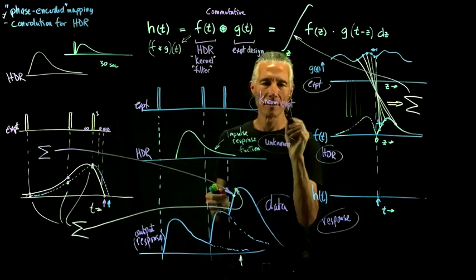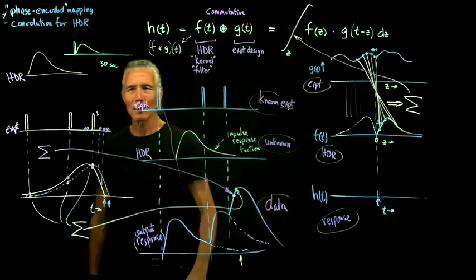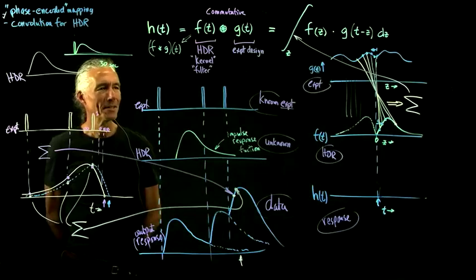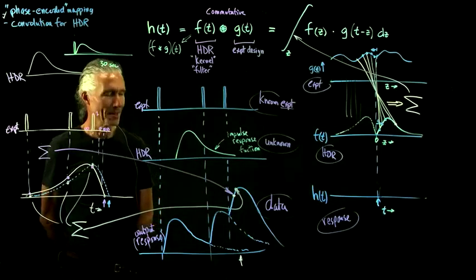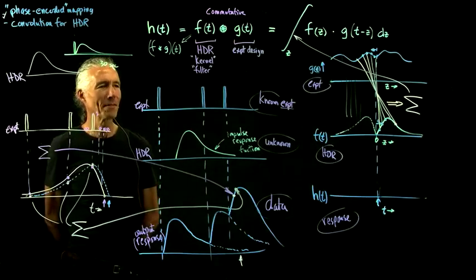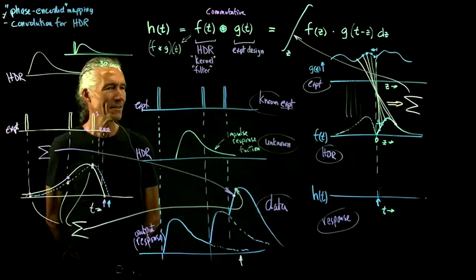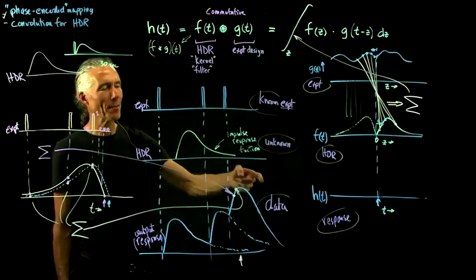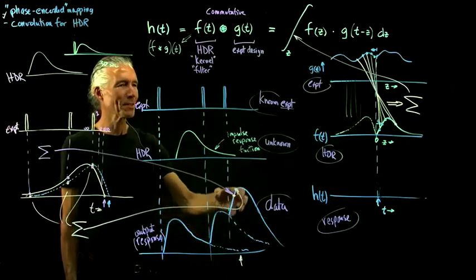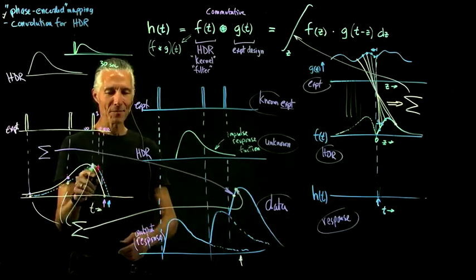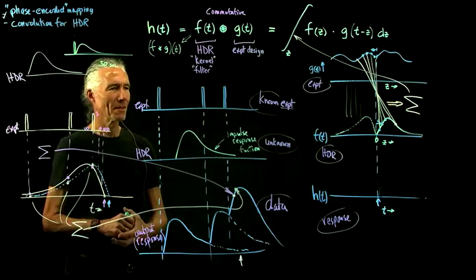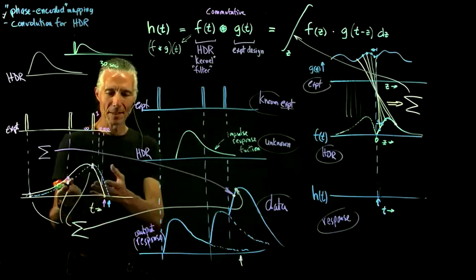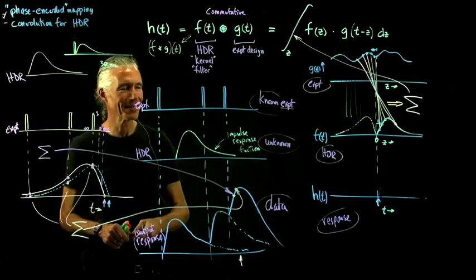Any questions about convolution or Fourier phase-encoded analysis, which is just another version of linear? The easiest way to think about it: you do something, something happens, it's causal, and you just paste those responses on top of each other. That's what you actually do to calculate it, and it makes sense why there's a minus sign — you're sort of going back in time.